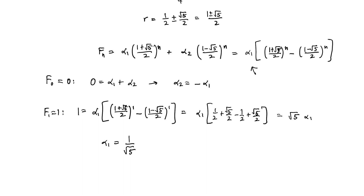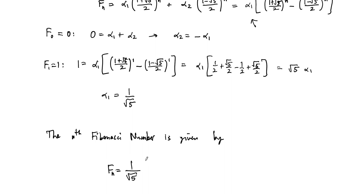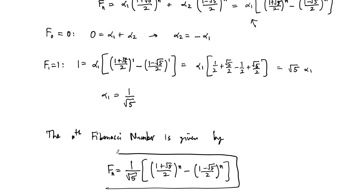Plugging back in, we get the closed formula for the nth Fibonacci number. A seemingly very simple sequence has a somewhat complicated-looking formula: F_n = (1/√5) · [((1 + √5)/2)^n − ((1 − √5)/2)^n]. You can start plugging in values of n to verify you get the right answers. This is the closed form of the Fibonacci sequence.